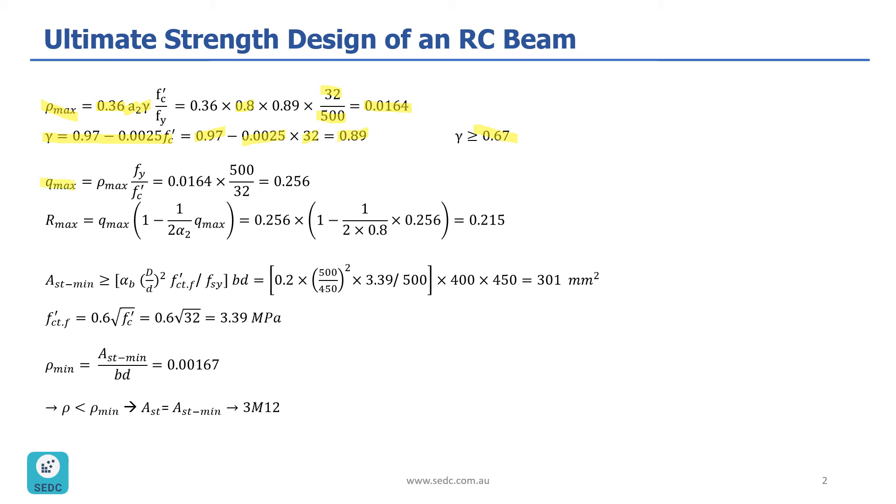Now, we can calculate Q max based on this Rho max. So, Q max is Rho max times 500 divided by 32, which is going to be 0.256.